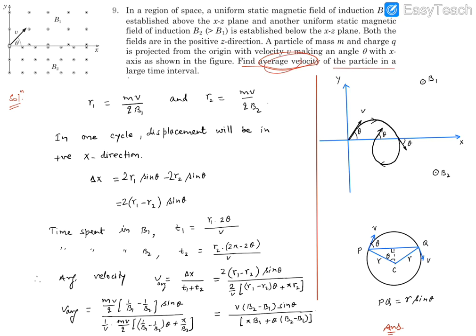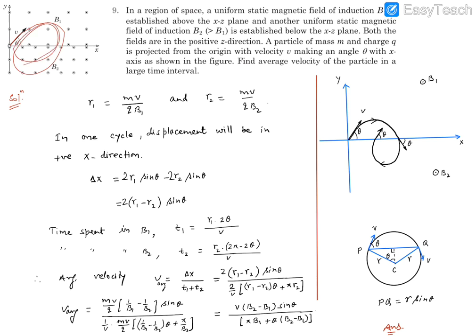We need to find the average velocity of the particle over a large time interval. First, we need to analyze what kind of motion it is going to follow, then find the displacement and time and divide them. If the magnetic field is uniform and velocity is perpendicular to the magnetic field, the particle moves in uniform circular motion. Since the two magnetic fields are different, the particle will move in circles of different radii in each region, separated by the xz plane.